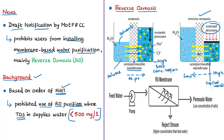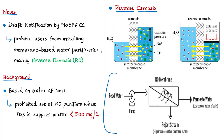Simply put, RO is a technology used to remove the large majority of contaminants from water by pushing water under pressure through a semi-permeable membrane. RO works by using a high-pressure pump to increase pressure on the saline side of the membrane, forcing water across it. This process helps reject almost 95 to 99 percent of dissolved salts, which leave along with water in a separate stream called the reject stream.